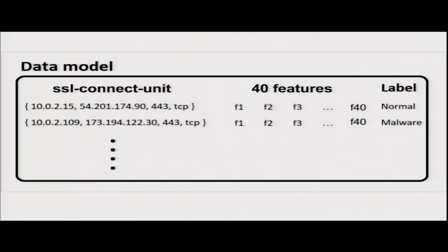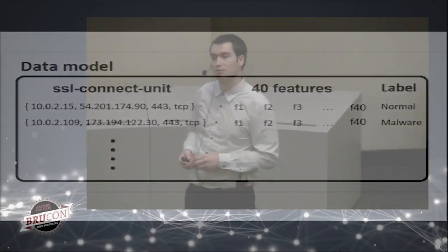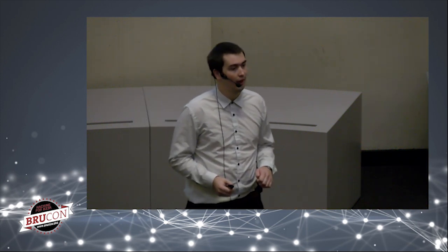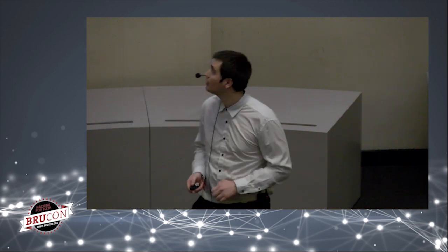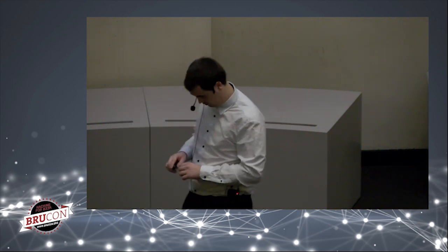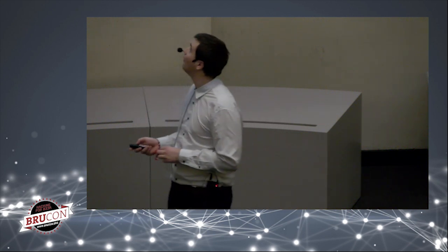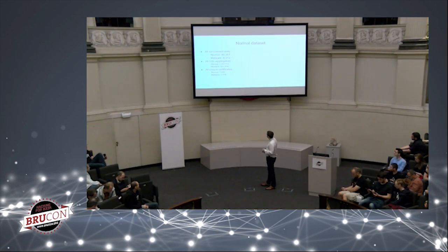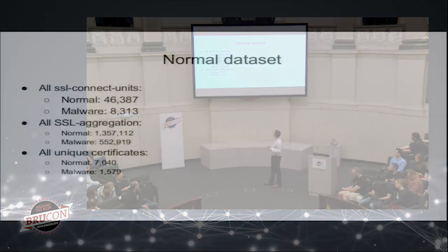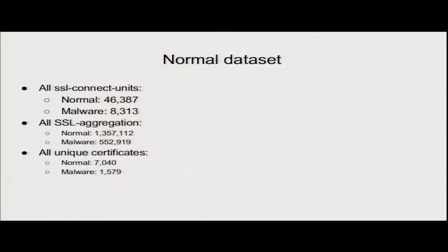In summary, there are 40 high-level features. In the end we create a data model where each row is one SSL connect unit with 40 features and a label. The data is normalized. In our dataset there are over 46,000 SSL connect units total, of which 8,000 are malware.